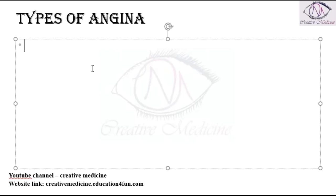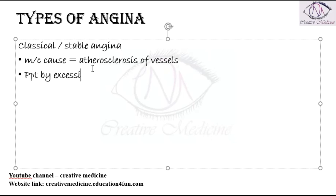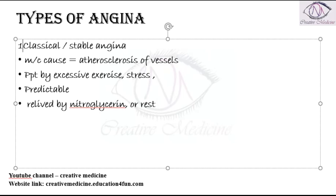Angina is of four types. The first is classical or stable angina. The most common cause of classical or stable angina is atherosclerosis of the vessel. It is precipitated by excessive exercise or stress, and thus it is a predictable type of pain. It is relieved by nitroglycerin, any type of nitrates, or by rest.